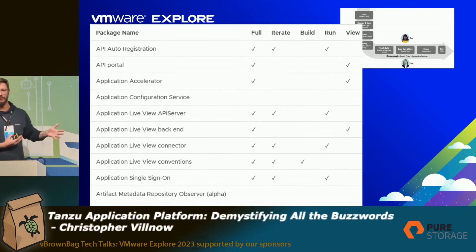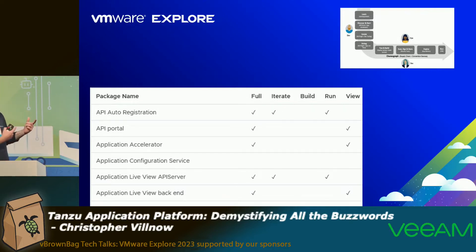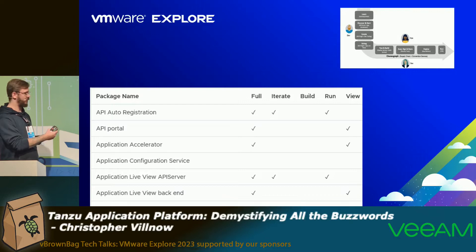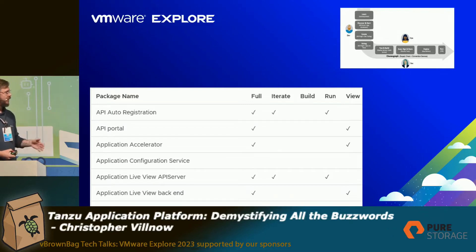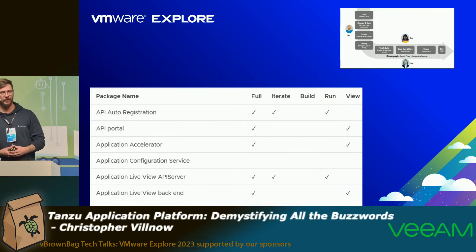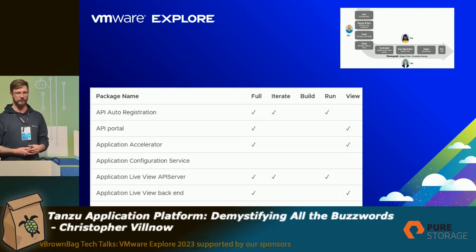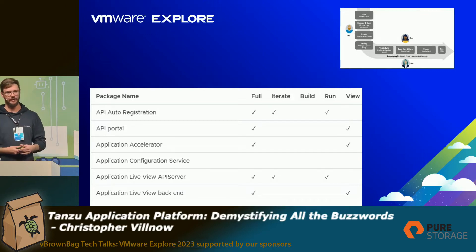That's actually everything you can have in the Tanzu Application Platform, and that's where it gets interesting — because you need to think about all these packages, all these steps on your way from the initial thought from the developer up until you get the application into production. I don't want to go into any details; you can look at the documentation at VMware — talking about everything there would keep us here until this evening. I would rather go into the detail of why we need to have all these packages installed at all.